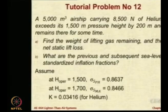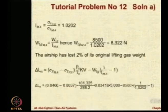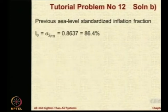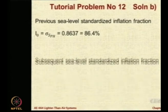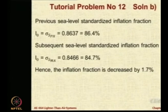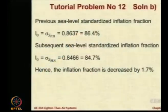Now the question number B was what are the previous and subsequent sea level standardized inflation fractions? This is very straightforward. This is equal to sigma. So, the inflation fraction is decreased by 1.7 percent. We know that the inflation fraction is simply equal to the sigma. So, it was supposed to have 86.4 percent gas and remaining air, but because pressure height has gone to 1700 or operating altitude is gone to 1700, the inflation fraction is decreased by 1.7 percent. It should actually carry more air to go there.